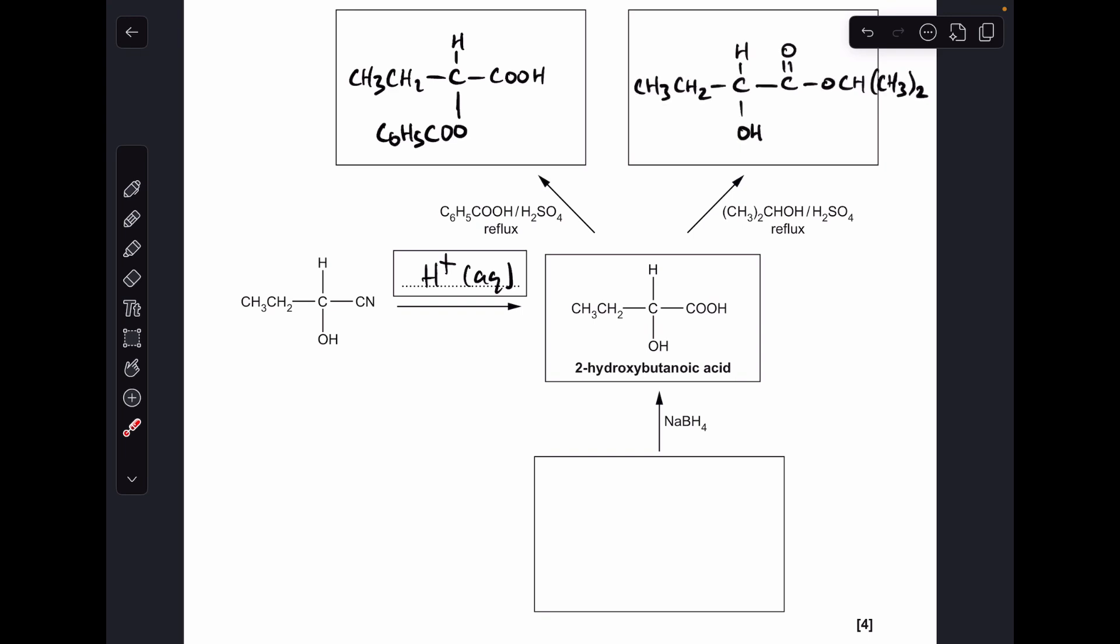And then finally something in here reacts with NABH4, and it generates the 2-hydroxybutanoic acid. So the thing we've got to appreciate here is that this NABH4 is a reducing agent, and it'll reduce a carbonyl compound to an alcohol. So there's your alcohol group there, we need to think what kind of alcohol is that. It's a secondary alcohol group, because the carbon with the OH on is bonded directly to two others. So what will have been reduced will have been a ketone.